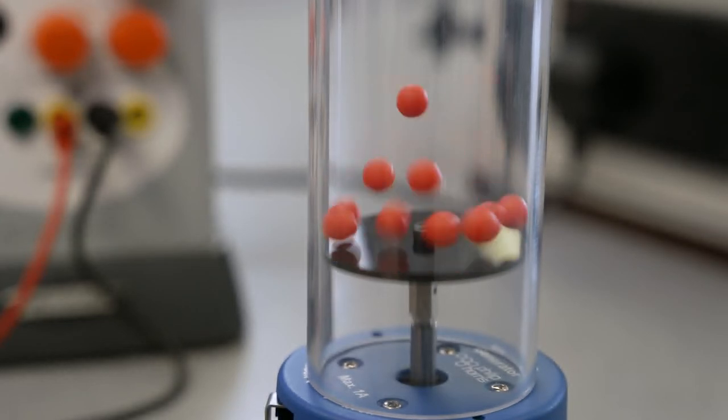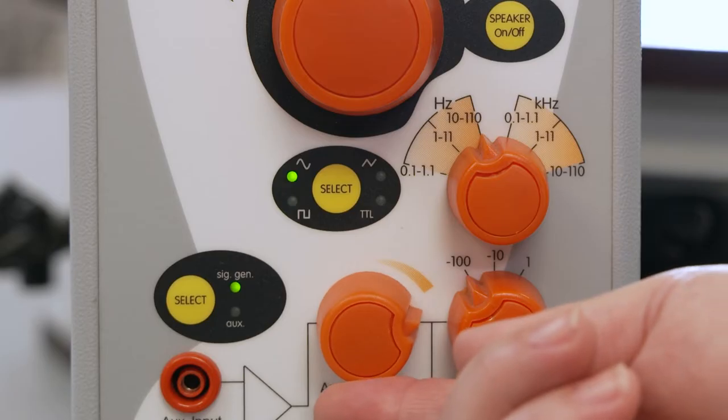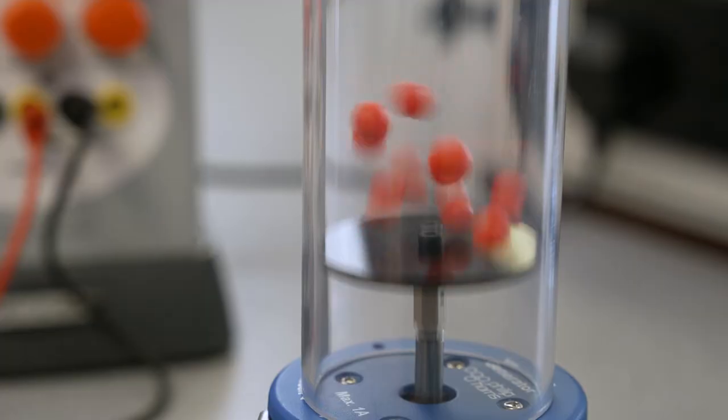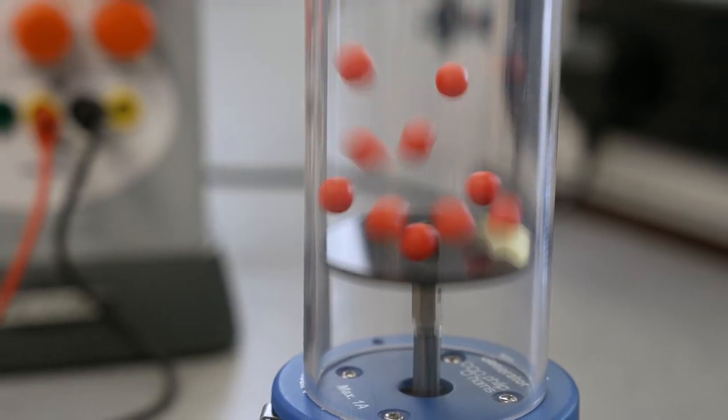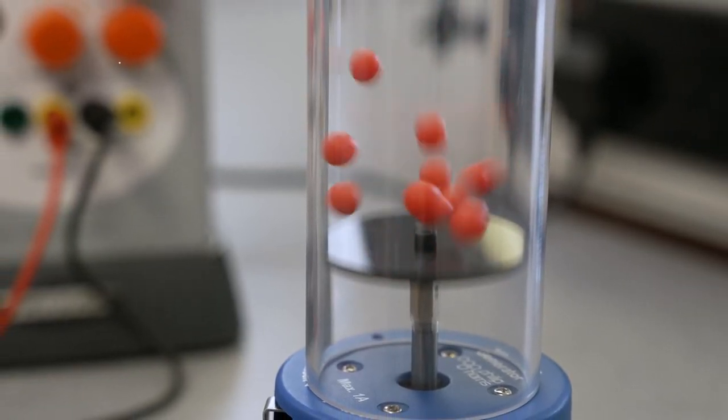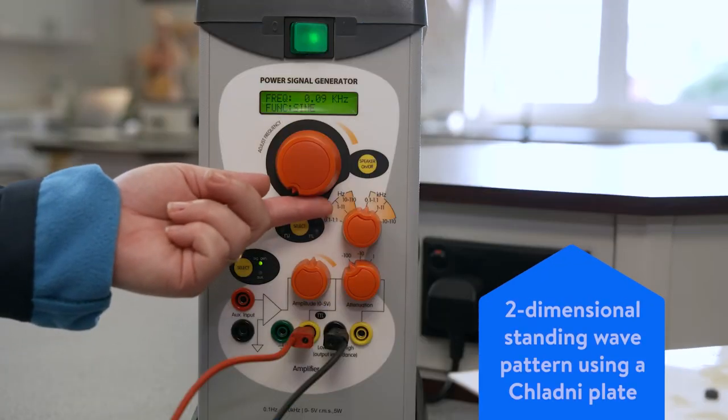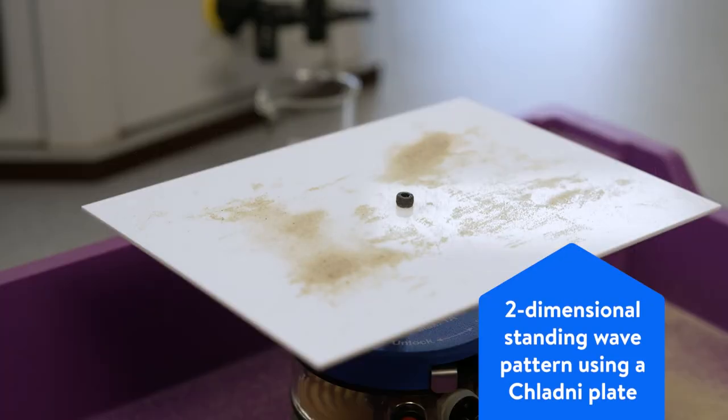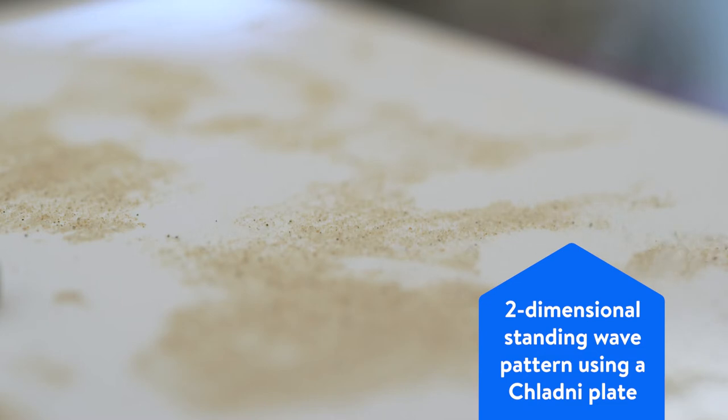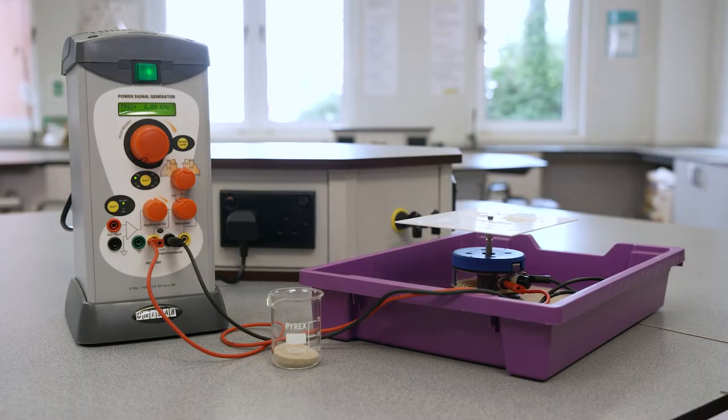When the amplitude is at the maximum, the separation between the balls will be more than 10 diameters. This represents a gas. Following on from this experiment we're going to demonstrate resonance using a Chladni plate.